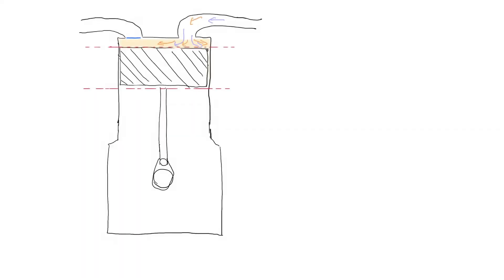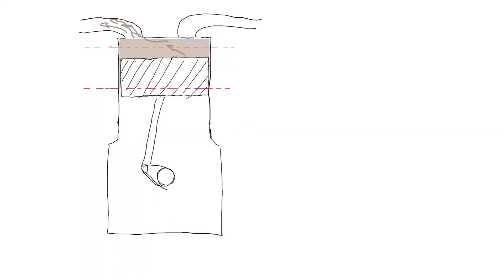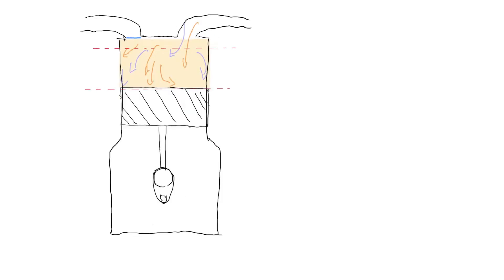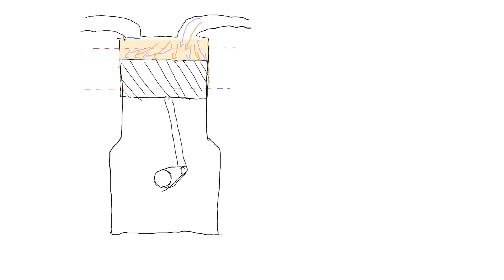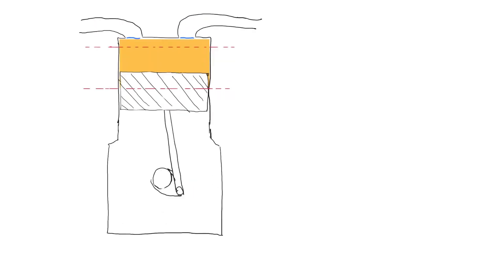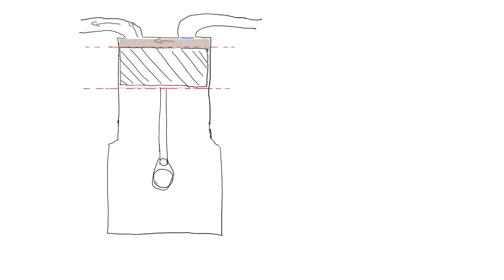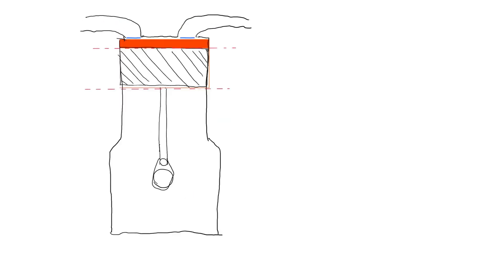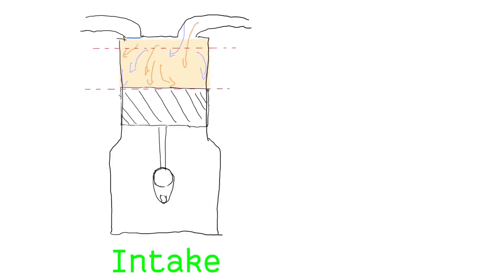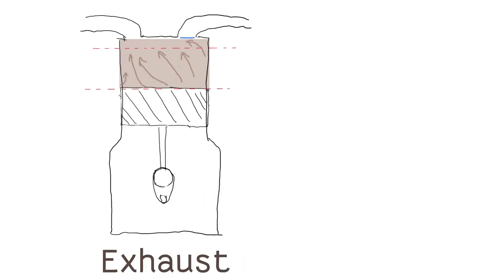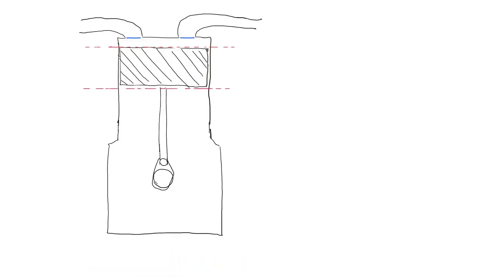The Otto engine is a four-stroke engine, a stroke being a complete extension or retraction of the piston. In a full cycle, the piston will perform two extensions and two retractions. These are called the intake, compression, power, and exhaust strokes respectively.